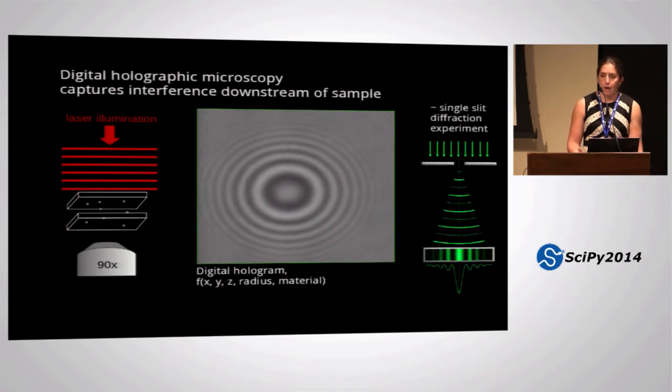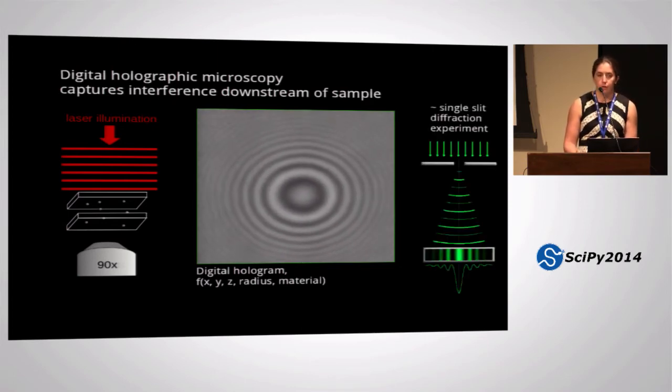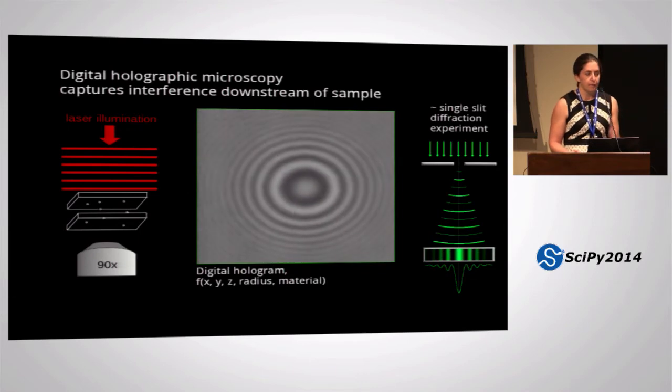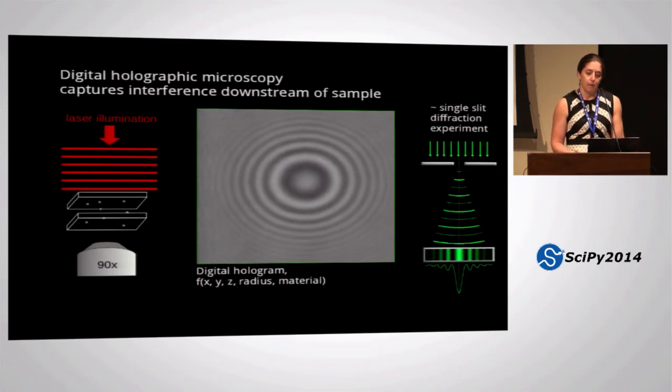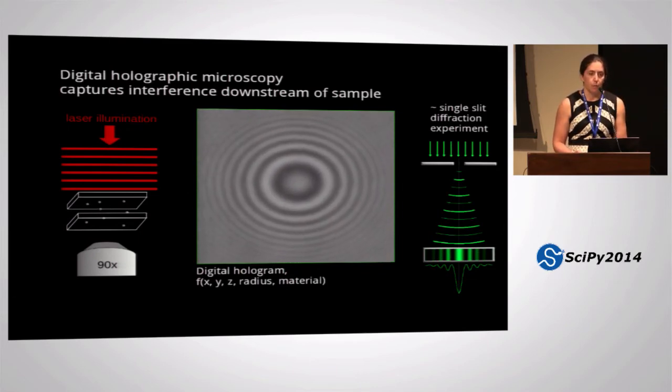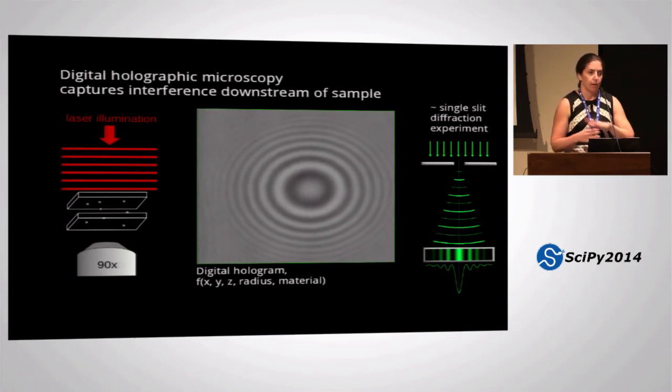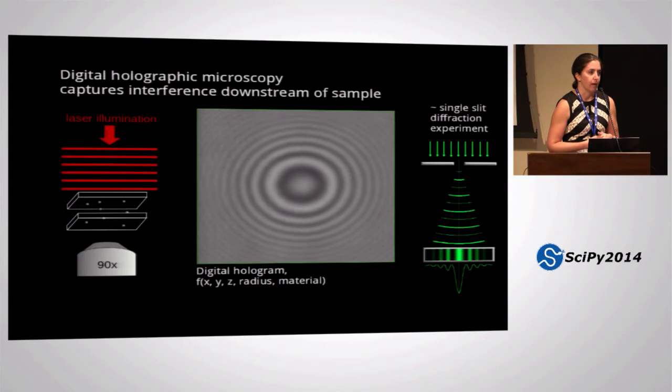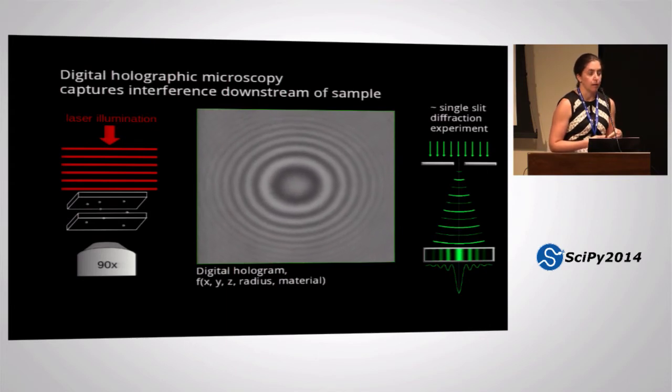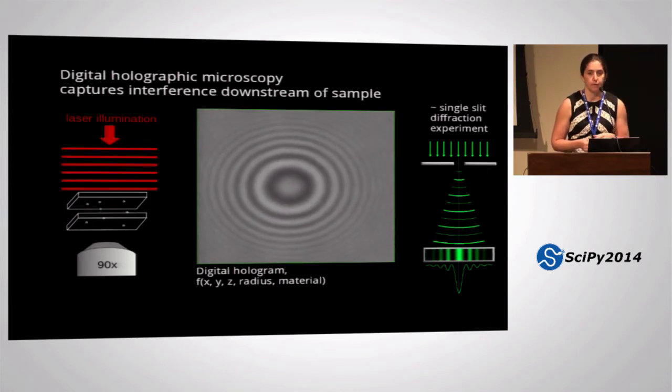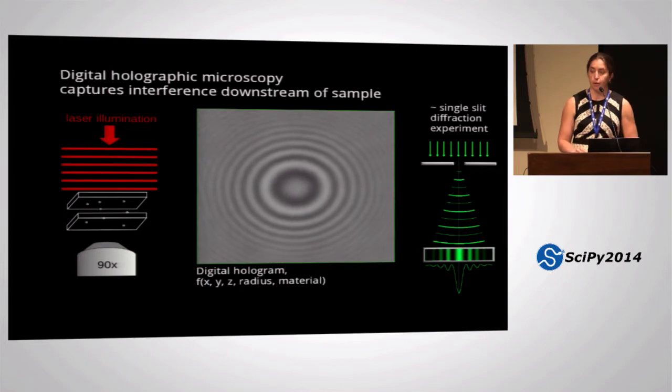You can get perhaps some intuition for this if you did a single slit diffraction experiment in a physics class where the pattern of bright stripes on the wall tells you about the size of the slit and how far away it is. You can think of the hologram as a two-dimensional representation of that that depends on the x, y, z coordinates of the particle as well as its radius and the material that it's made out of.